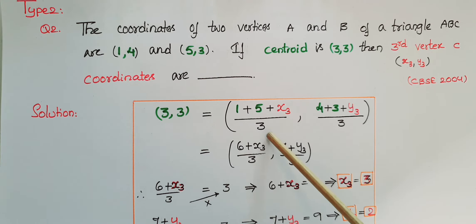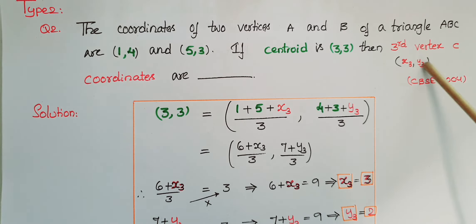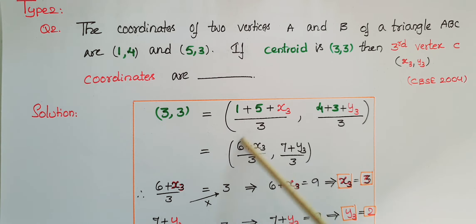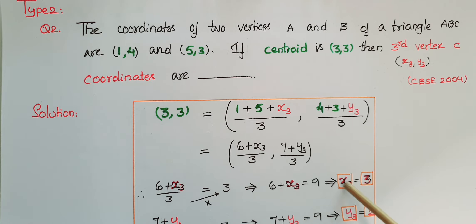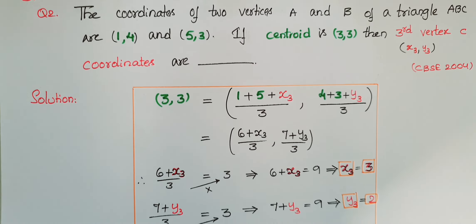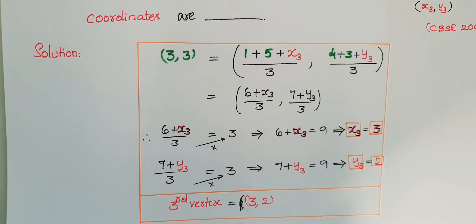So we have (1 + 5 + x3) / 3 for x, and (4 + 3 + y3) / 3 for y, giving (6 + x3) / 3 and (7 + y3) / 3. Equating x-coordinates: (6 + x3) / 3 = 3, so 6 + x3 = 9, giving x3 = 3. Similarly equating y-coordinates gives y3 = 2. Therefore the third vertex of the triangle is (3, 2).